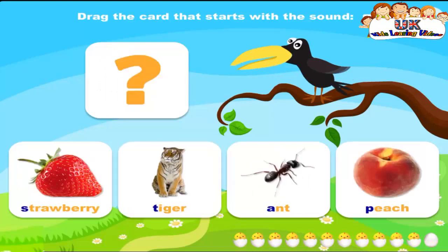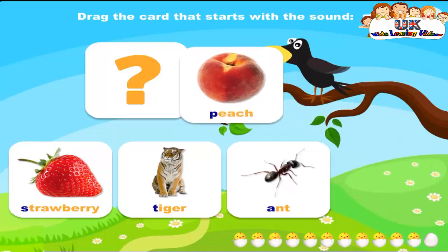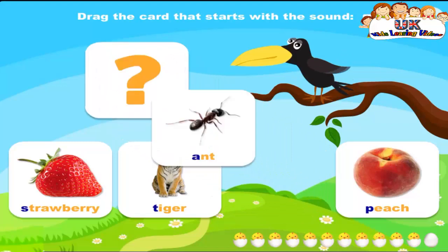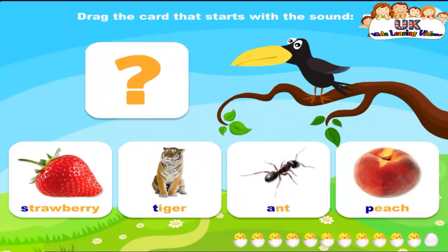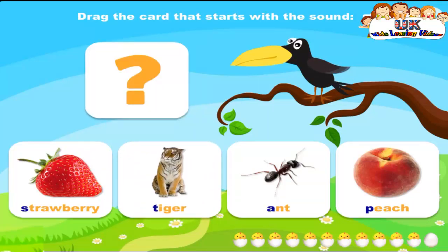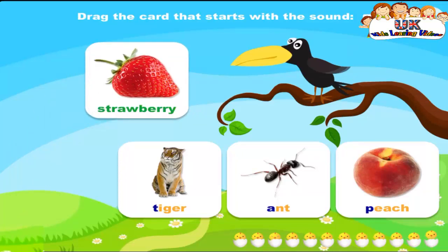Drag the card that starts with the sound S. Peach. Drag the card that starts with the sound S. Ant. Drag the card that starts with the sound S. Tiger. Drag the card that starts with the sound S. Strawberry. Super cool! S, s, strawberry.